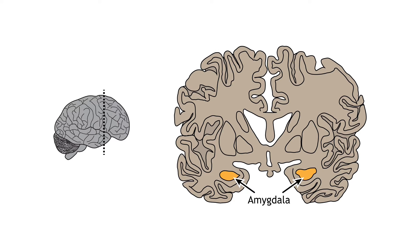Activity is seen in the prefrontal cortex, hippocampus, and amygdala, which have direct and indirect connections to the hypothalamus. The prefrontal cortex plays an executive decision-making role, the hippocampus places events in context with previous memories, and the amygdala assesses a wide range of stimuli for their potential ability to cause harm and places an emotional value on them.